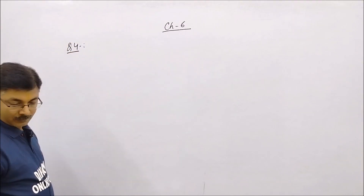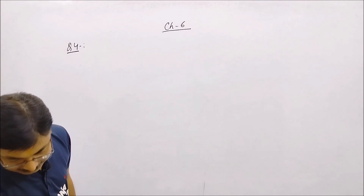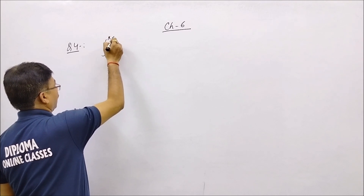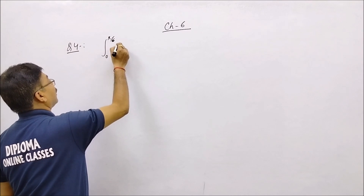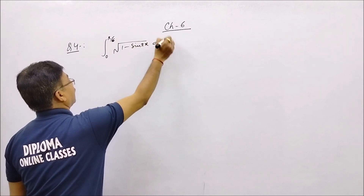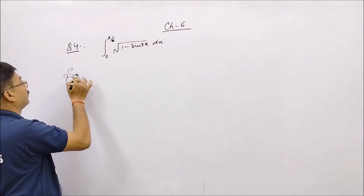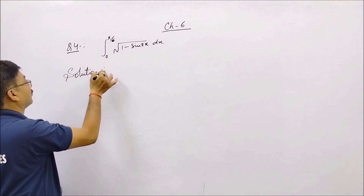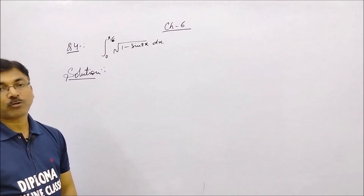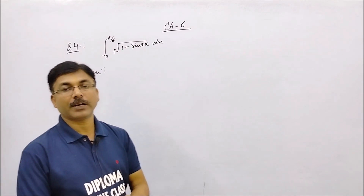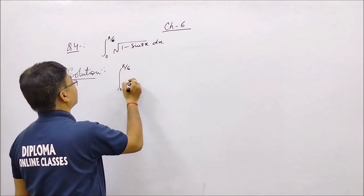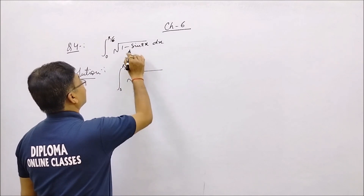Question number 4: we have the definite integral from 0 to pi by 6 of under root 1 minus sin 2x dx.